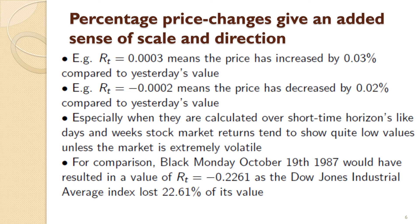Especially when calculated for short time horizons like days and weeks, asset price returns tend to show quite low values unless the market is extremely volatile. This is one reason why cryptocurrencies are so interesting to look at in terms of price data — they're known to be highly volatile. For well-established companies like Tesco or Sainsbury's, you'd expect their stock price to remain relatively stable, so these return values would be relatively low. As an indication, 22% isn't necessarily a large number in general, but in terms of price returns, this is ginormous.